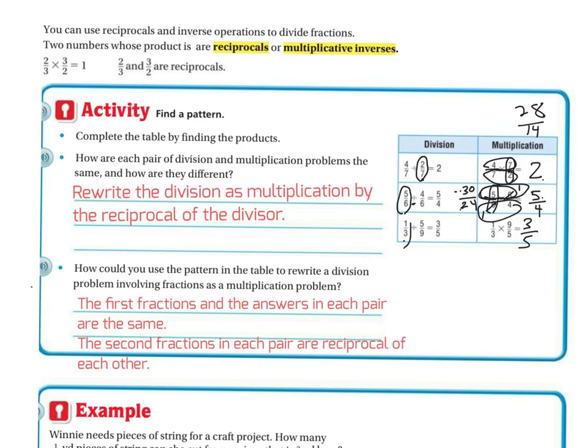So this first one, we always keep the same, but then the second one, we do the reciprocal, the opposite. So if it's five ninths, we're going to make it nine fifths. If it's one third, we're going to make it three over one. That second number. And then you just multiply straight across. It's a pretty simple way to do it.